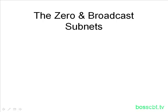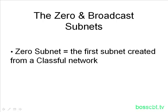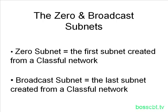Let's start by looking at what these two subnets are. The first one, the zero subnet, is quite simply the first subnet that's created when you break up a classful network. So if you have a Class B and you subnet it and look at all the different subnets you created, the very first one is called the zero subnet. The broadcast subnet is at the other end — it's the last subnet created when you break up a classful network. Initially, these two subnets created some ambiguity with the network that was subnetted and the actual subnets that were created.